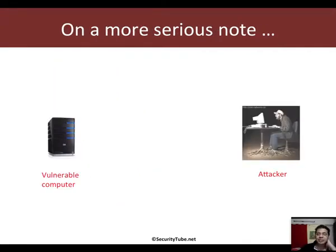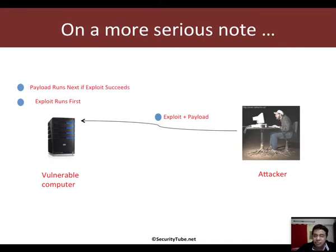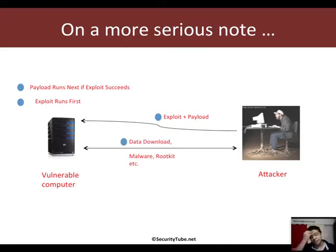On a more serious note, in the typical case, an attacker sends a combination of the exploit and the payload to the vulnerable machine or victim. Typically, the exploit runs first. If the exploit succeeds, the payload runs next. After the payload runs, in most common cases, the attacker would have full control of the victim machine and then he can download data, upload malware, spyware, whatever he requires.